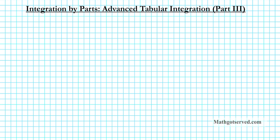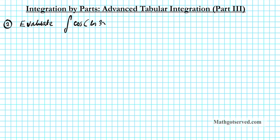Good day students and welcome to part 3 of my integration by parts advanced tabular integration series. Let's go ahead and take a look at the second example. This is a continuation of the two-part series in advanced tabular integration. For number two, we have to evaluate the indefinite integral of cosine of the natural logarithm of 3x.